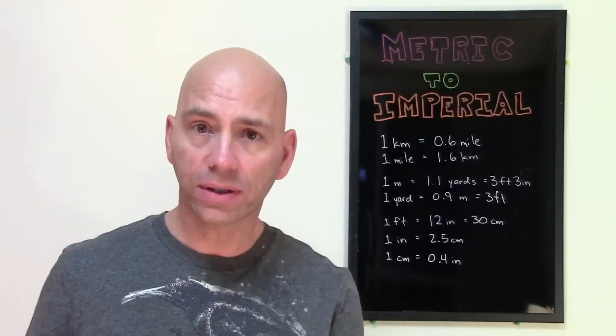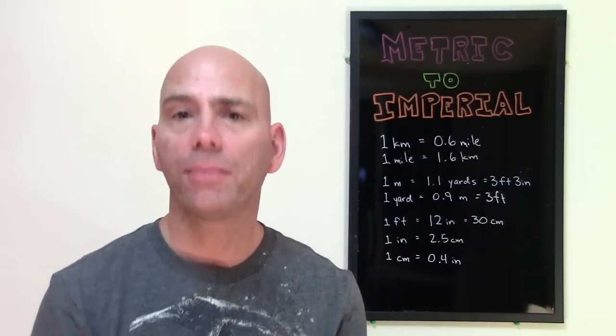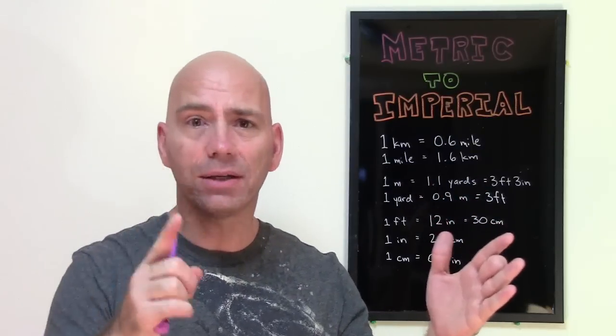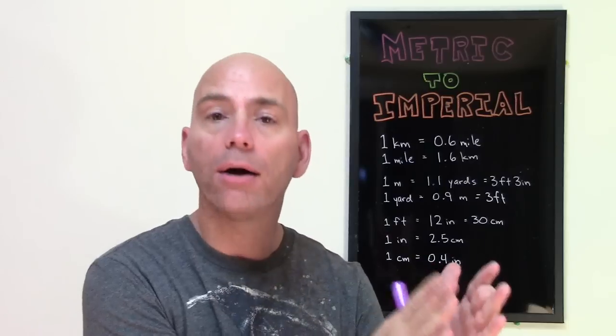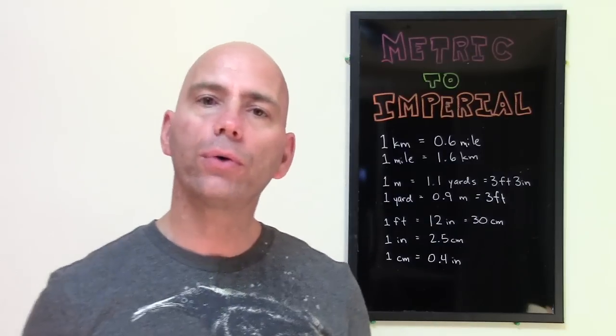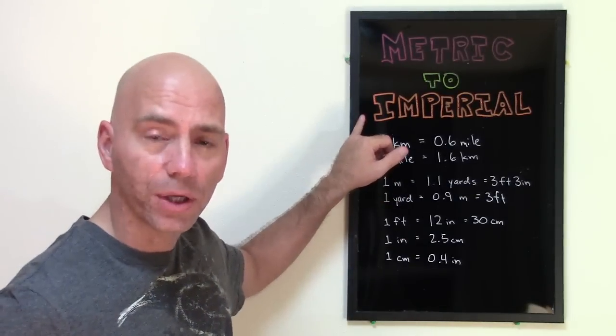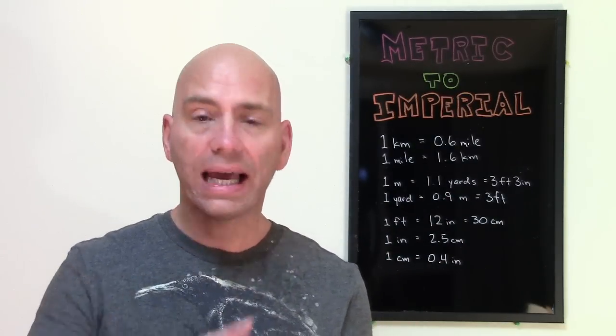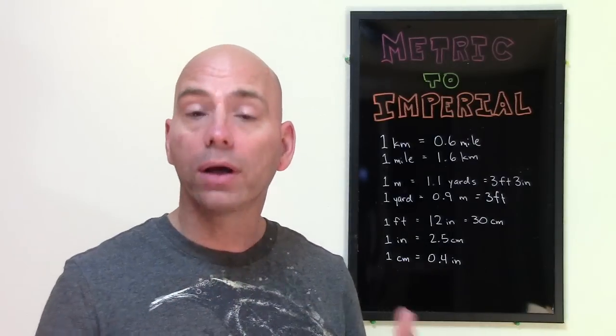For example, in the metric system, we use centimeters, millimeters, meters, kilometers. So everything is based on the meter. A centimeter is one one-hundredth of a meter. A millimeter is one one-thousandth of a meter. And a kilometer is a thousand meters. But if you go to the United States, they don't use meters. They use the imperial system, which means they use inches, feet, yards, and miles for length. So today's video is focused on length or distance.